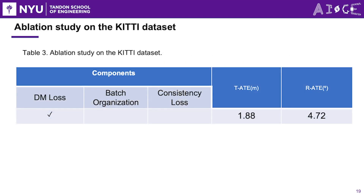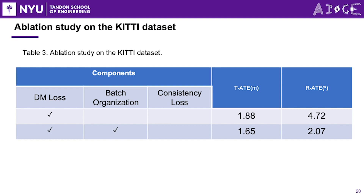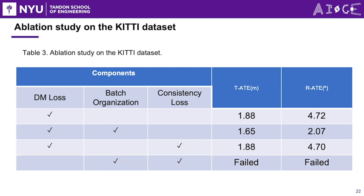In this slide, we present the results of our ablation study conducted on the KITTI dataset, systematically evaluating the impact of three key components: original DeepMapping loss, batch organization, and consistency loss. We start by showcasing the result achieved using the original DeepMapping approach as the baseline. Next, we introduce batch organization and highlight the significant improvements it provides in mapping accuracy. We further investigate how consistency loss offers additional improvement. Importantly, without the original DeepMapping loss, the network fails to converge. Finally, combining all three components yields the best absolute trajectory error (ATE) results, underscoring the significance of these components working together.